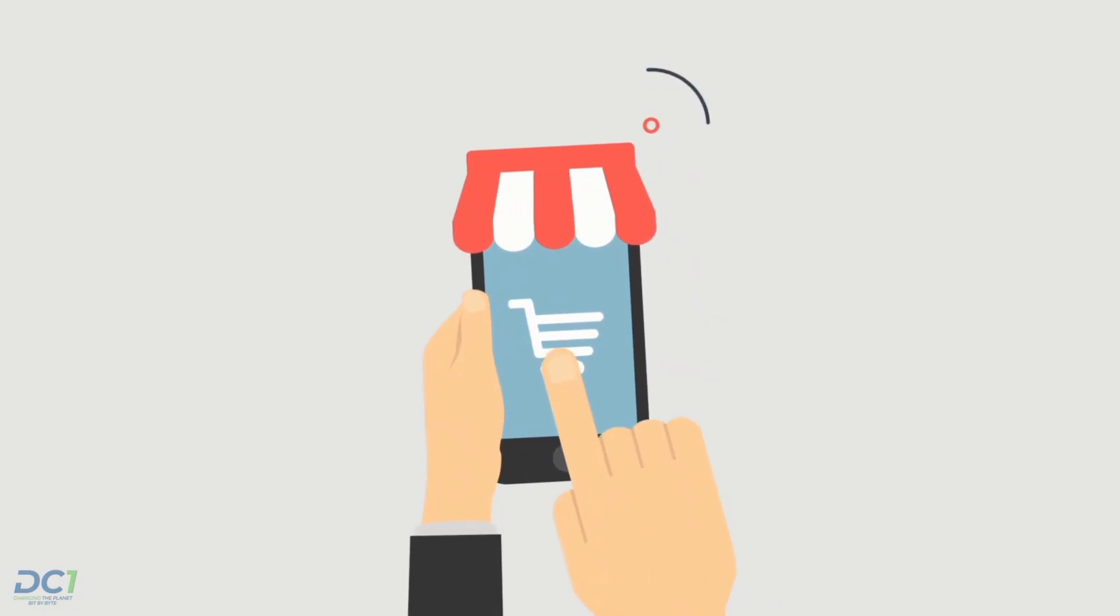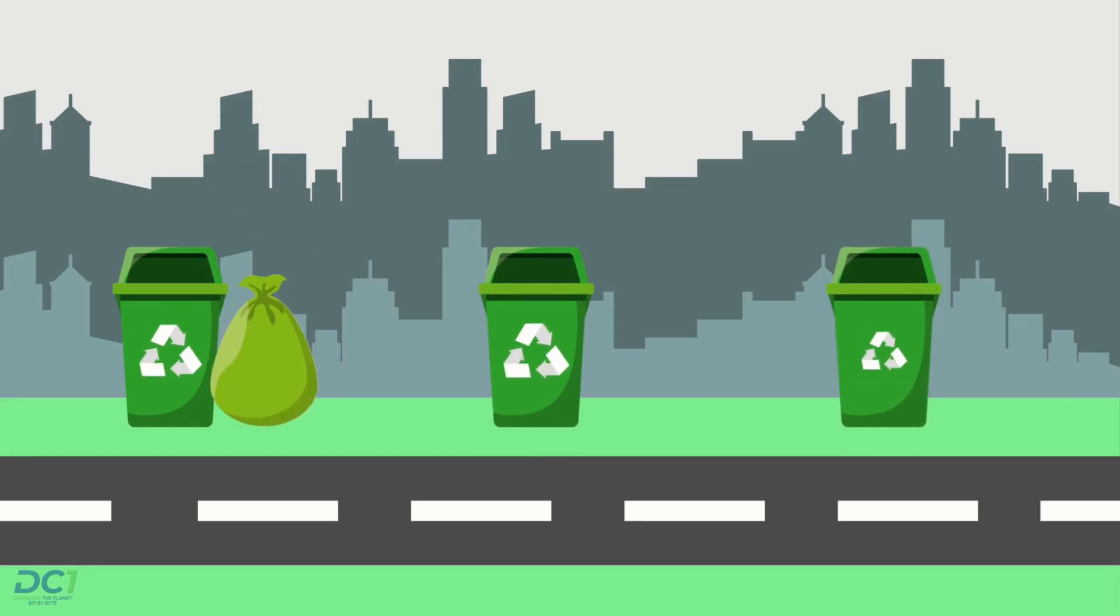Most tracking ends at the point of sale. But Data Company One keeps track through the disposal process to close the loop and information gap that currently exists.